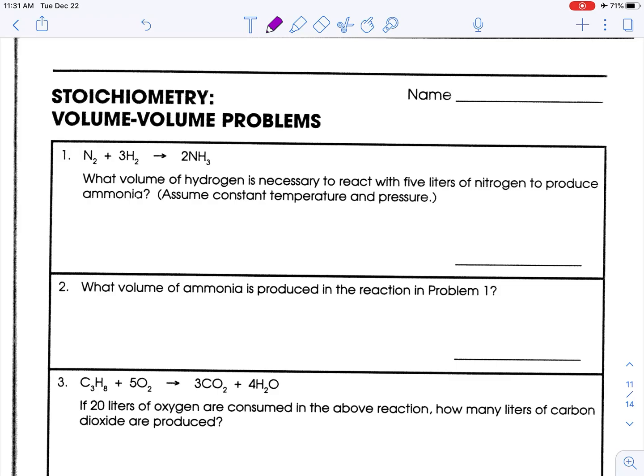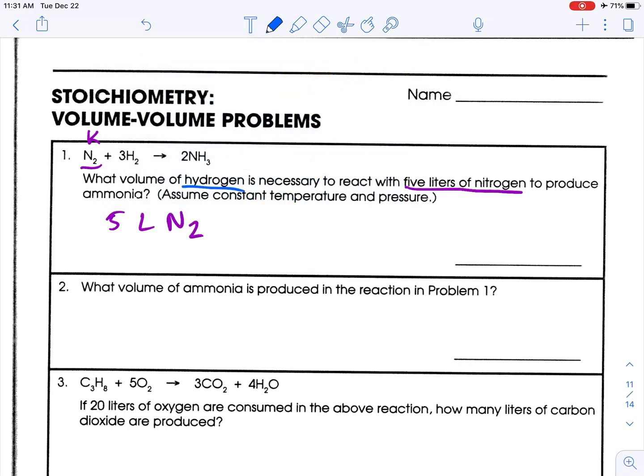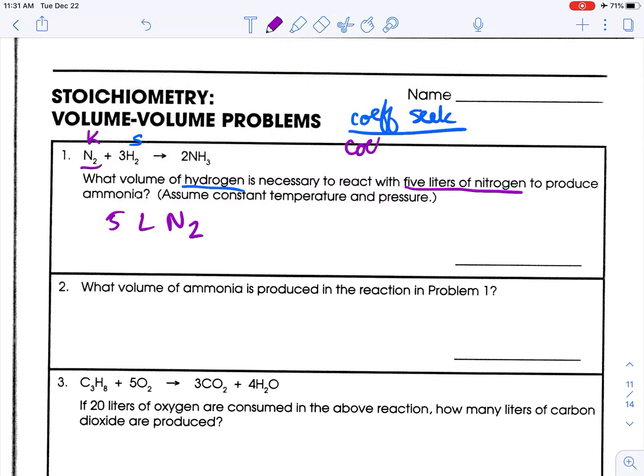What volume of hydrogen is necessary to react with 5 liters of nitrogen? So 5 liters of nitrogen is our given, which we know. What we seek is hydrogen. And remember, what we're going to do is we're going to do the coefficient of what we seek over the coefficient of what you know. And that's going to be our conversion factor.